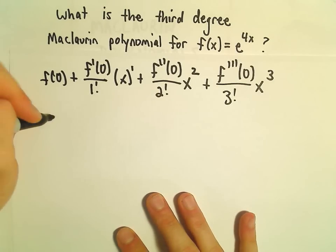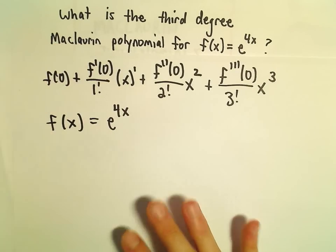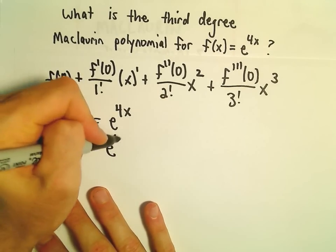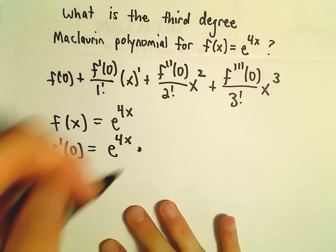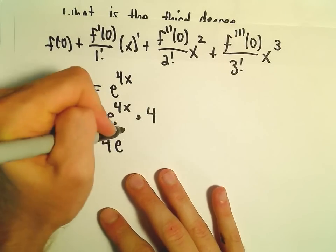Our function is e^(4x). These derivatives aren't too bad - we have to use the chain rule. When we take the derivative of e^(4x), we get e^(4x), but we also take the derivative of the exponent, giving us an extra 4. So we have 4e^(4x).